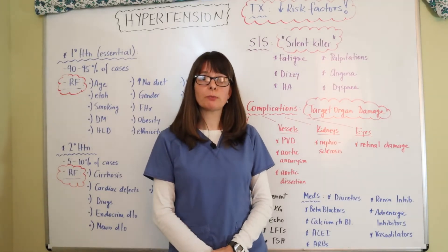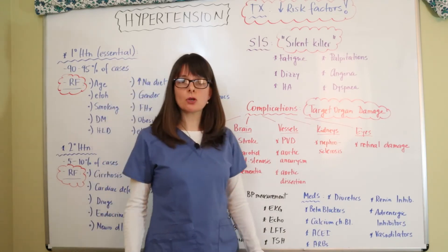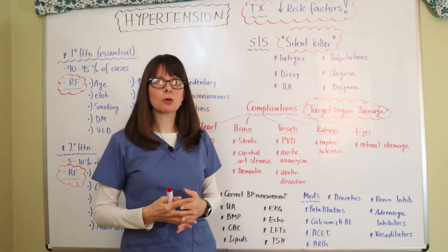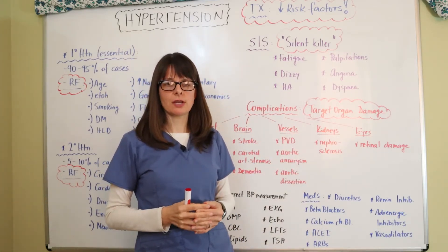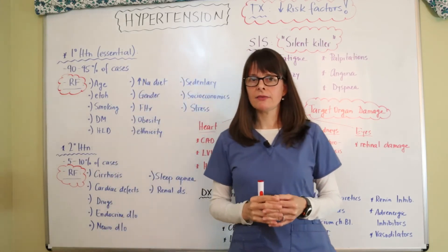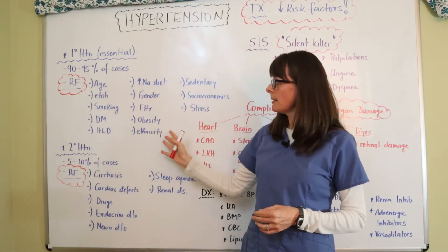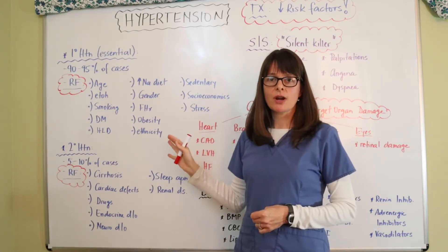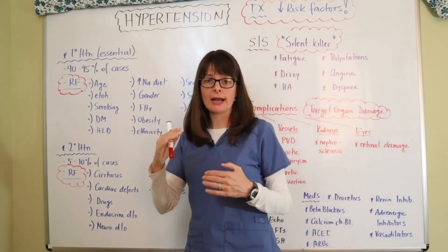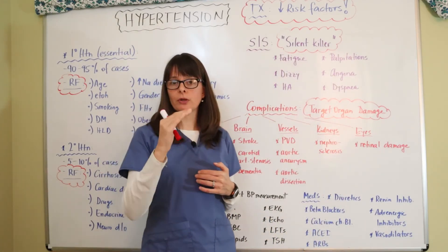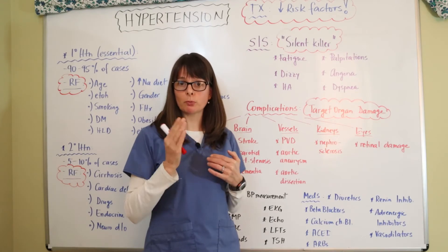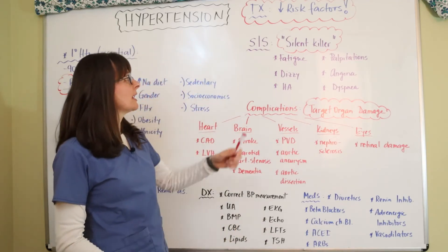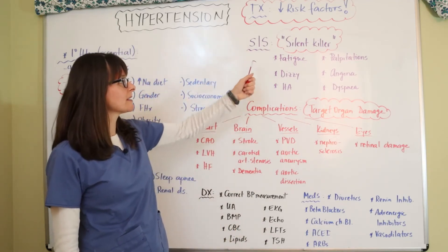Now let's look at the treatment for hypertension. Because we have so many risk factors, mostly for primary hypertension, the treatment goal is always to reduce those risk factors. Because there are so many lifestyle changes that can be done to eliminate some of these risk factors, I made a separate video that addresses lifestyle changes and how much they can reduce blood pressure in millimeters of mercury. Please watch that second video — the link is in the card section.